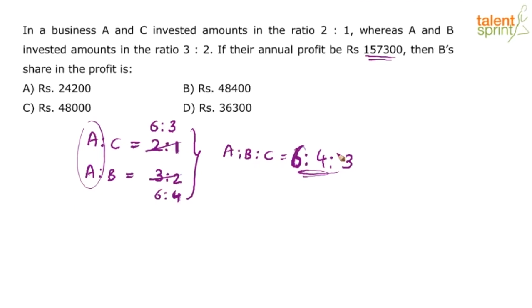Then, simply, he is asking us to find out the share of B. B has got 4 parts. 4 out of total. 4 plus 6, 10. 10 plus 3, 13. 4 out of 13. Multiply this by 1, 5, 7, 3. Now, here comes the point. How quickly do you divide 1573 by 13? This is what matters.